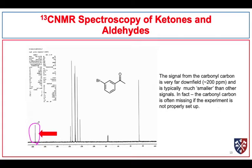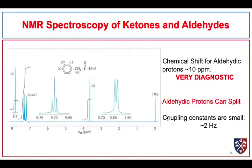Sometimes we need to adjust our experiment to make sure we capture the carbonyl carbon signal. If we expect an aldehyde or ketone but don't see a peak around 200 ppm, we may need to change the NMR parameters, because those signals can sometimes be hard to capture.